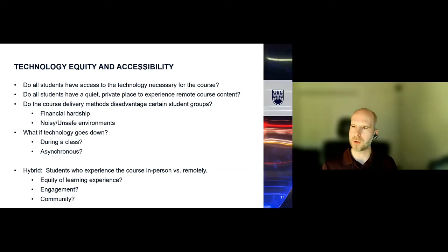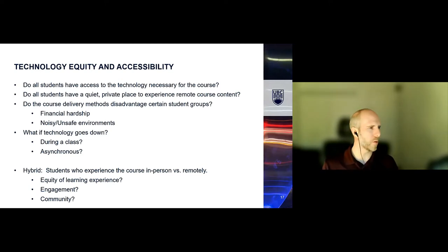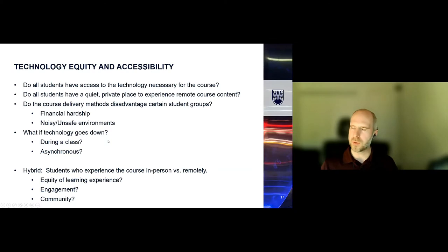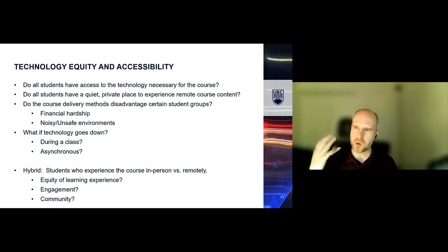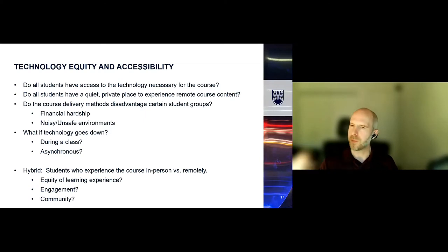We make certain assumptions about technology availability for students in these courses. We have to ask questions of financial hardship, noise, unsafe environments, and always: what if technology goes down? If a student is attending through their phone because that's all they can afford and that phone dies or they lose their 4G connection — we put a lot of onus on students to provide the technology they need. We have to respect the possibility that students may simply be unable to attend due to technology failure at their end.